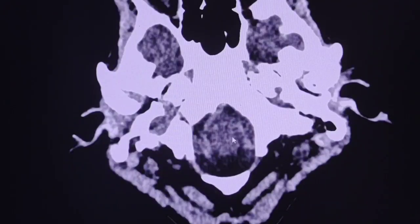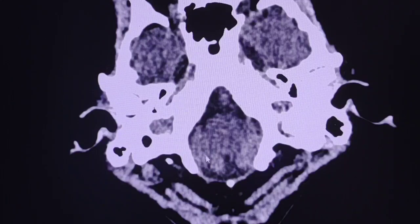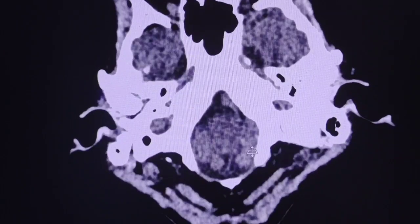This is the medulla oblongata and here normally are the cerebellar tonsils. They are lying a little lower than expected.